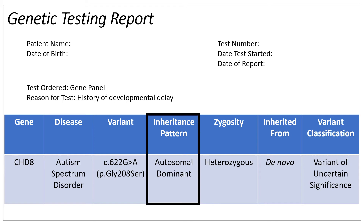Autosomal means the gene is on one of the first 22 pairs of our chromosomes. Individuals typically have two copies of these genes. In this example report, we see the inheritance pattern is autosomal dominant, meaning this individual has a disease-causing or pathogenic variant on one copy of the gene and may experience signs or symptoms associated with the condition.